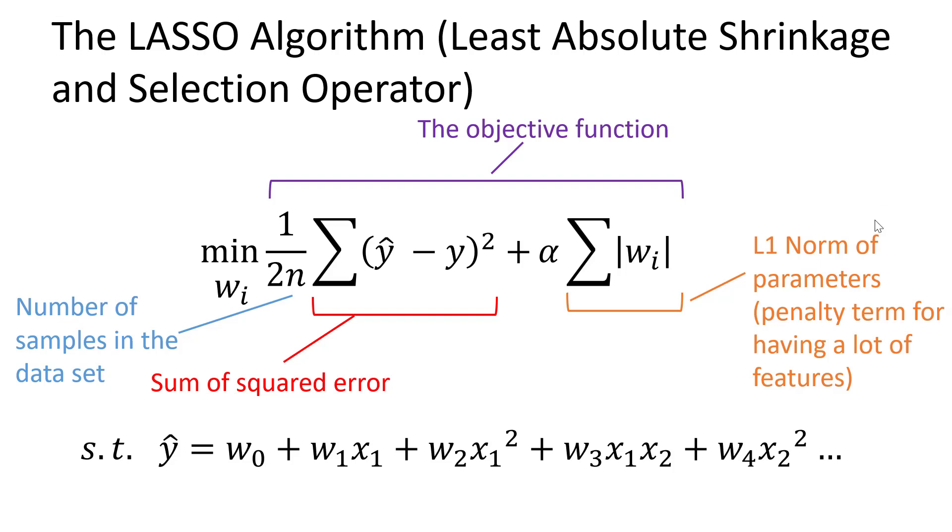The L1 means we're taking the absolute value so this has a linear weighting in our objective function. Essentially what this term does is this allows us to balance having a really precise model where our data is aligning very close with our model estimates.